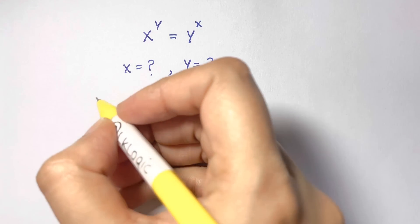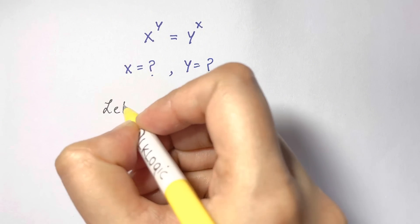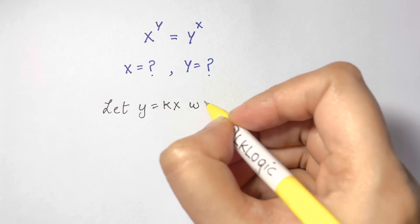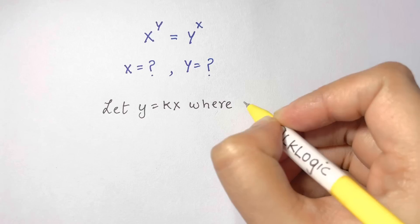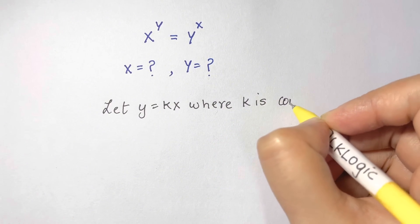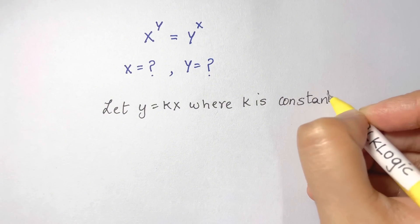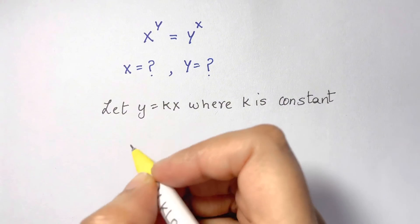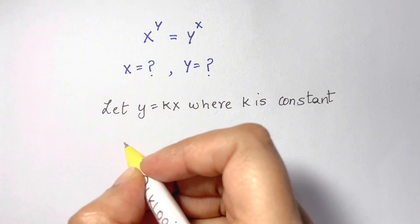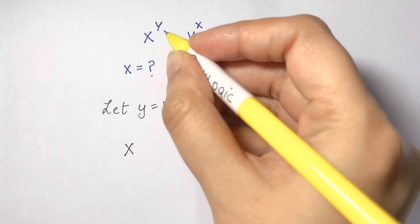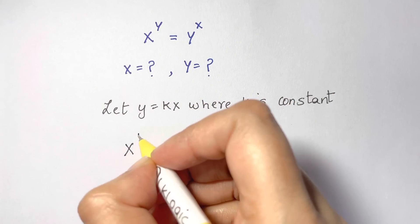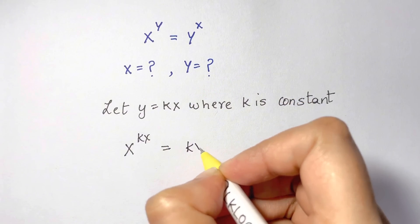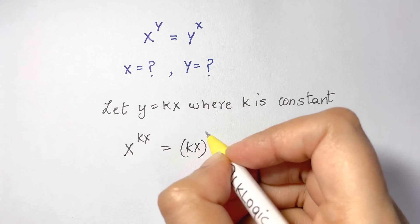We are going to let y equal to kx, where k is a constant. Let's substitute this. So we have x to the power of y, and in place of y we are going to put kx, equal to kx whole to the power of x.